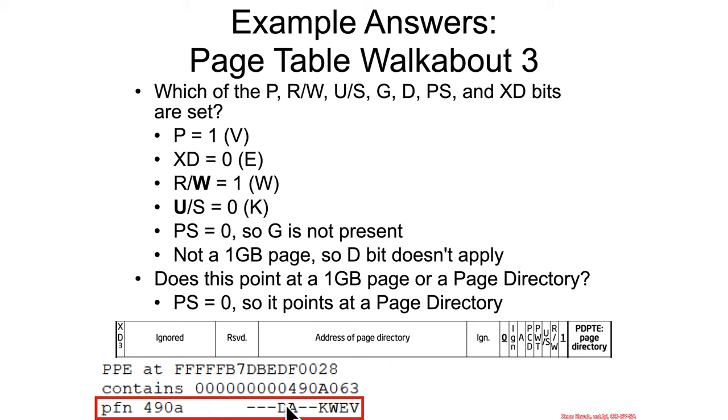If you look at the PS bit, it's set to zero, so this is the proper interpretation. And in this interpretation, there is no actual D bit. What would be the D bit is treated as ignored as far as the MMU is concerned.